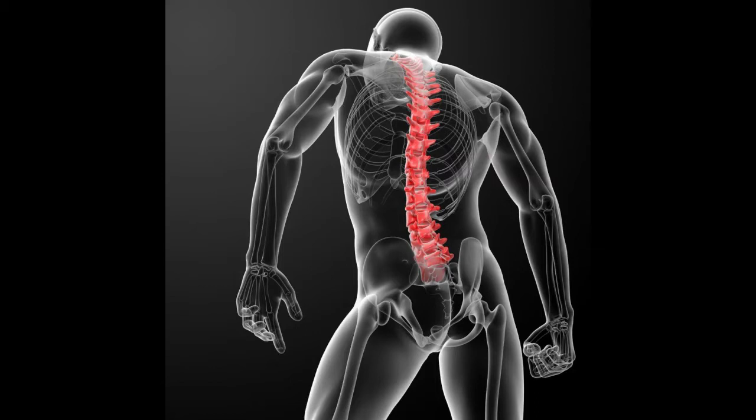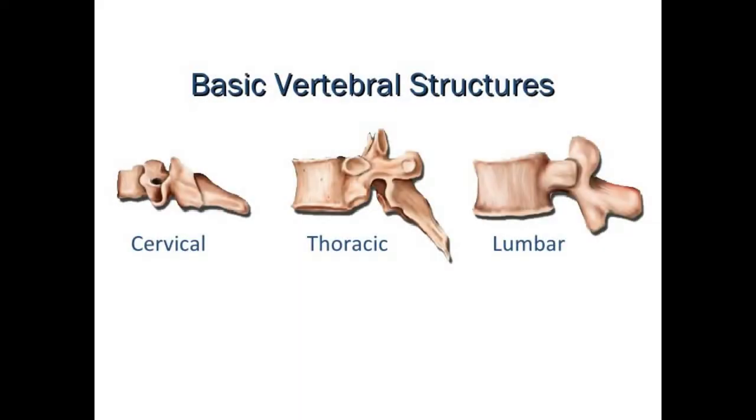The 33 vertebrae number is a general rule that allows for the common enough anatomical variation of one additional vertebrae or one less, usually in the thoracic region. This can be identified in some cases by observing someone who is shorter than you while standing but taller when you both sit down, or conversely, a person who is taller while standing yet shorter when you both are seated.